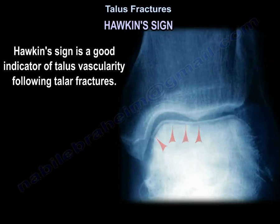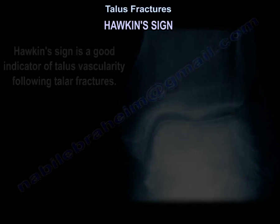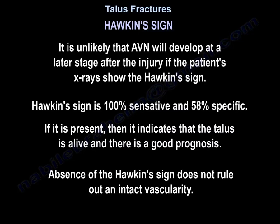If you don't have Hawkins sign, it may indicate interruption of the blood supply and vascularity of the talus. Hawkins sign is usually seen between six to eight weeks after injury, caused by disuse osteopenia and resorption of the subchondral bone. It is 100% sensitive and 58% specific — if present, it indicates the talus is alive and there is a good prognosis. Its absence does not rule out intact vascularity.